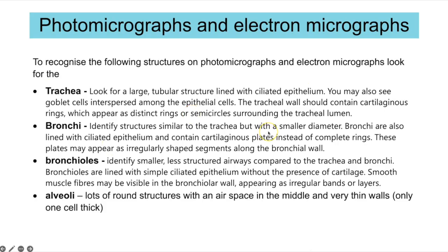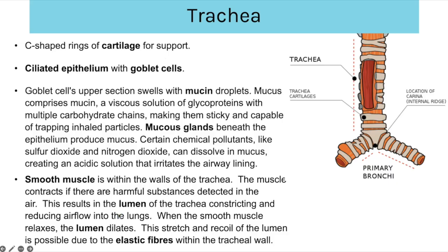The tracheal wall should contain cartilage with c-shaped rings. The bronchi are similar to the trachea but smaller in diameter, also lined with ciliated epithelium, but they contain cartilaginous plates instead of complete rings, which may appear as irregular shaped segments along the wall. The bronchioles are smaller, less structured airways with no cartilage, lined with simple ciliated epithelium, and smooth muscle fibers may be visible in the wall. The alveoli appear as lots of round structures with an air space in the middle and very thin walls only one cell thick.